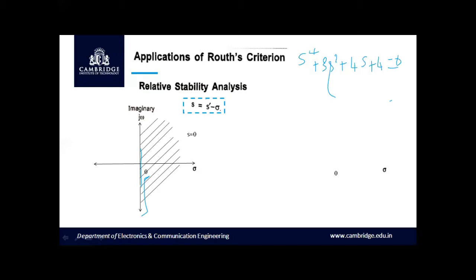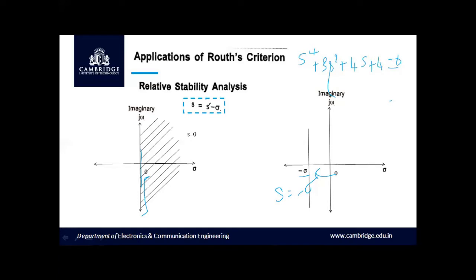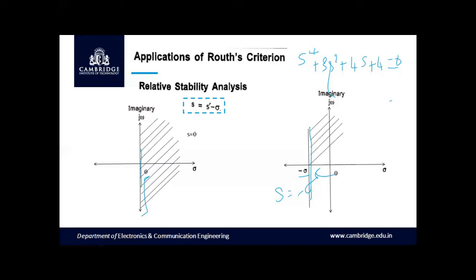Now if we need to determine how many roots are present in the left half of the s-plane with respect to the line s = -sigma, we shift our reference. If we take s = -sigma as a reference, where sigma is a constant, there is a shift from the origin towards the plane s = -sigma. Analyzing how many roots are located in the right half of this line makes the Routh method more effective, and we call this relative stability analysis.